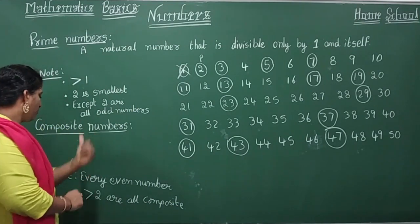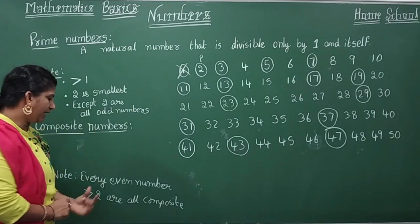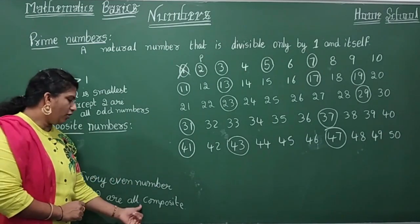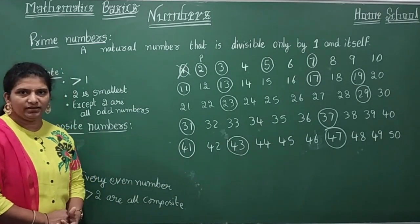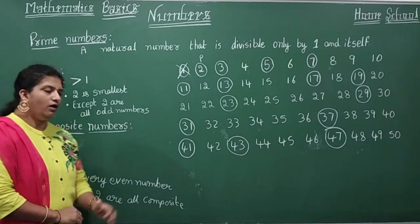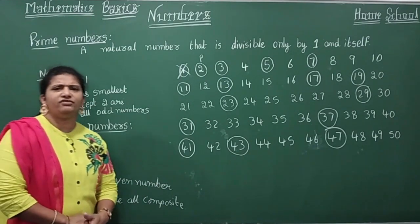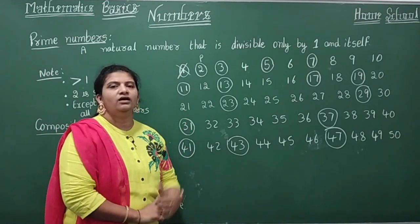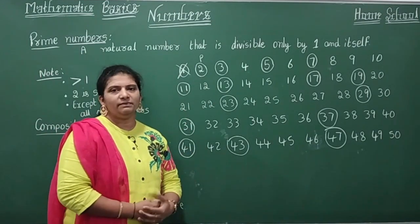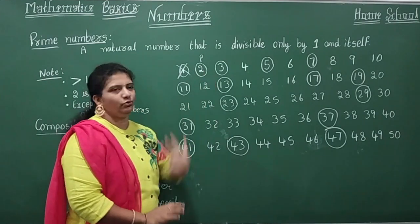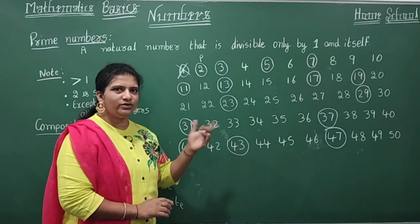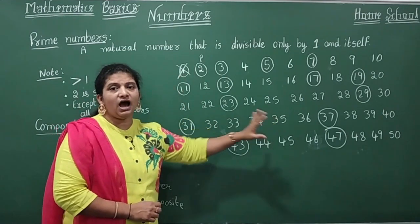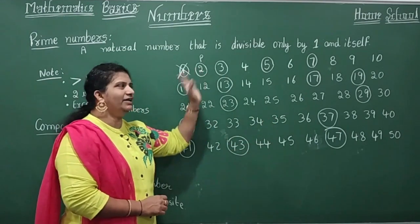Coming to composite numbers: every even number greater than two is a composite number. Any even number you consider will be composite — other than two, because two is already a prime number. So all even numbers are composite other than two.